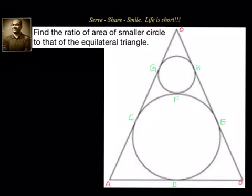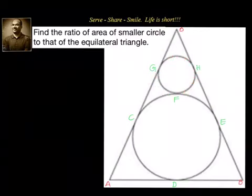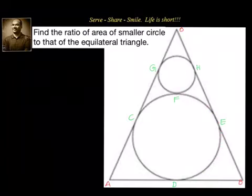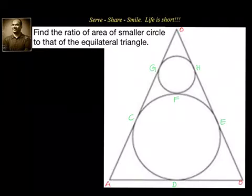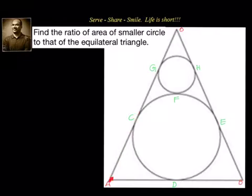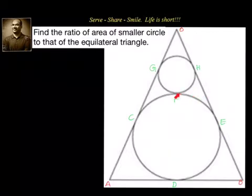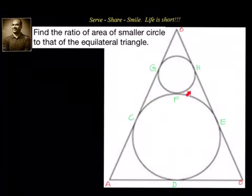We have to find out the ratio of area of the smaller circle with respect to that of the equilateral triangle. The approach we are going to use: we want to leverage the concept that the length of tangents drawn from an external point to a circle are equal. We will draw another line here so that we can get two more tangent points, making our calculation very easy.